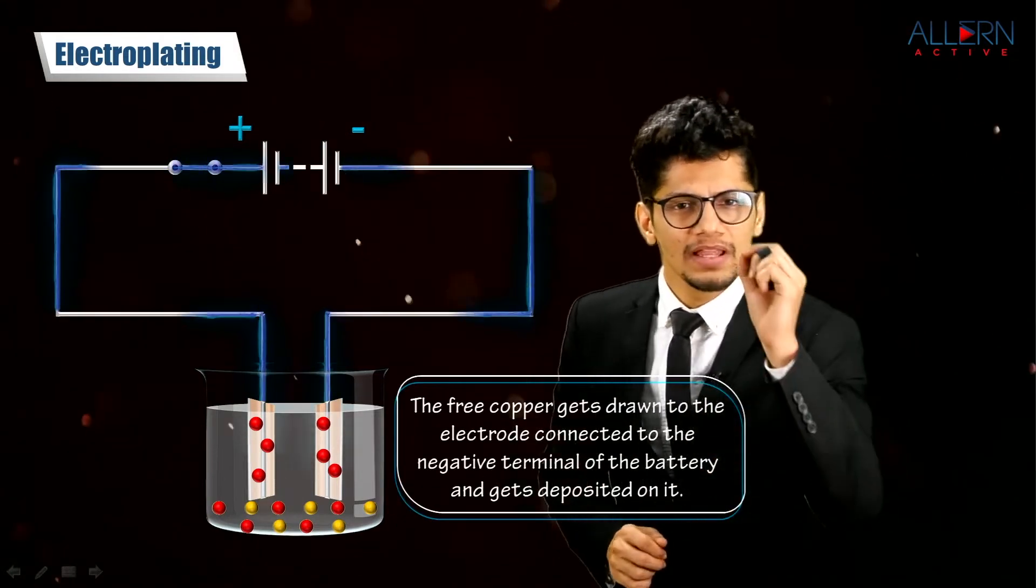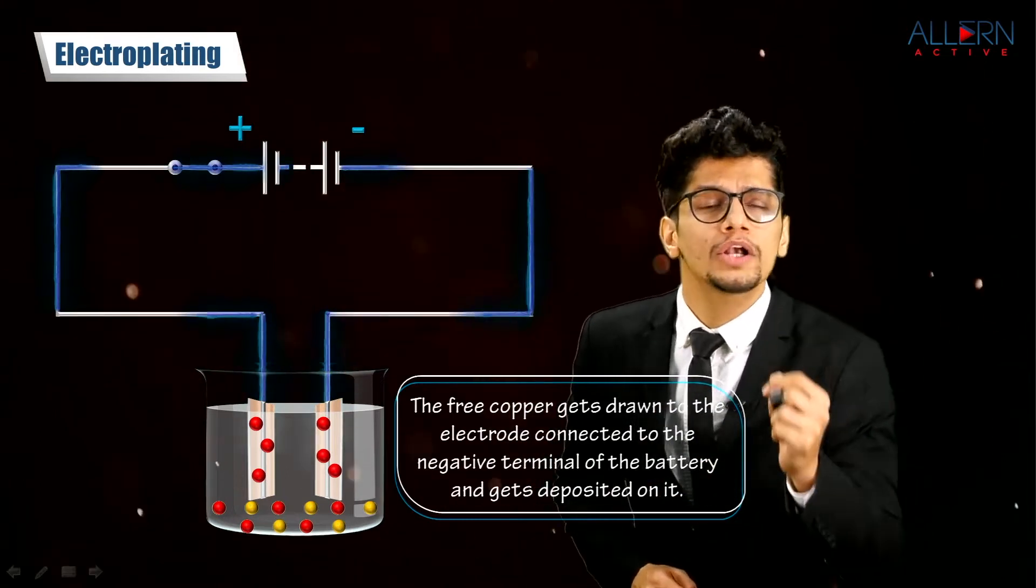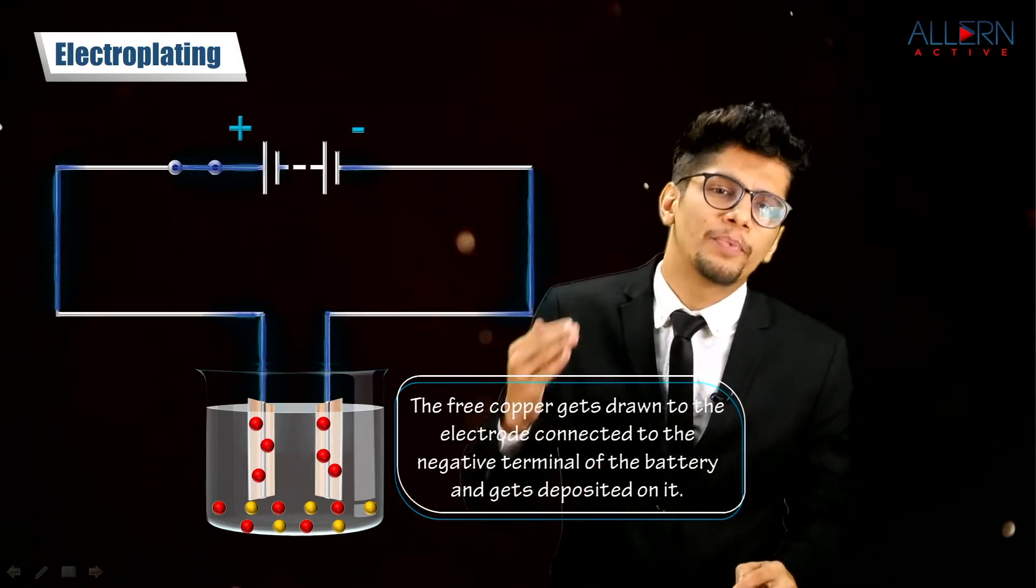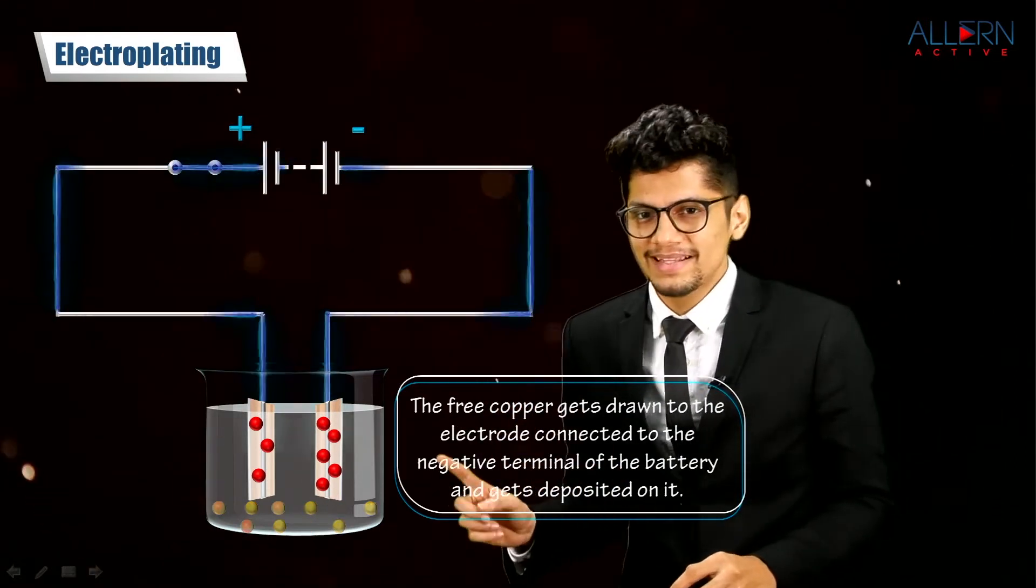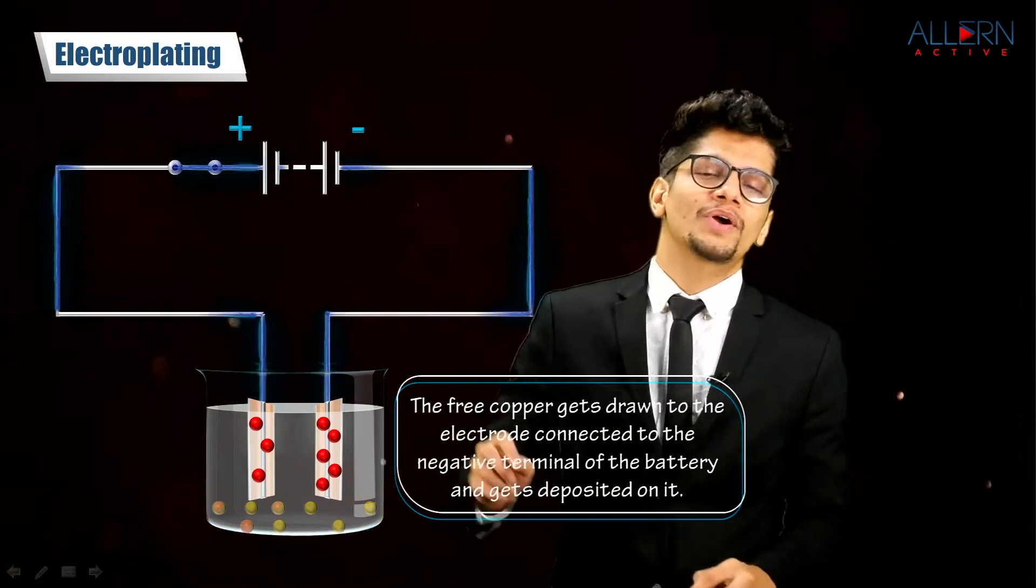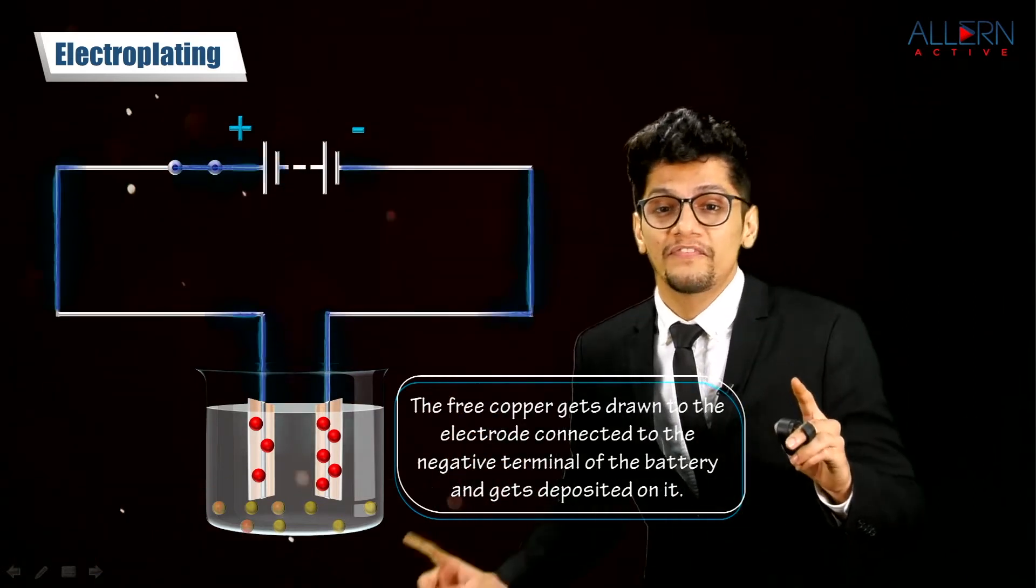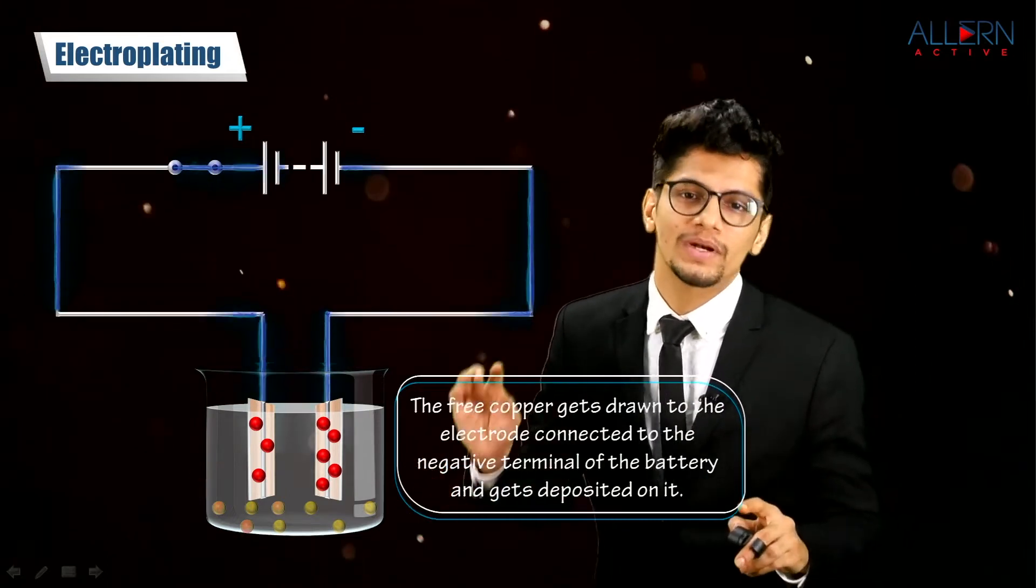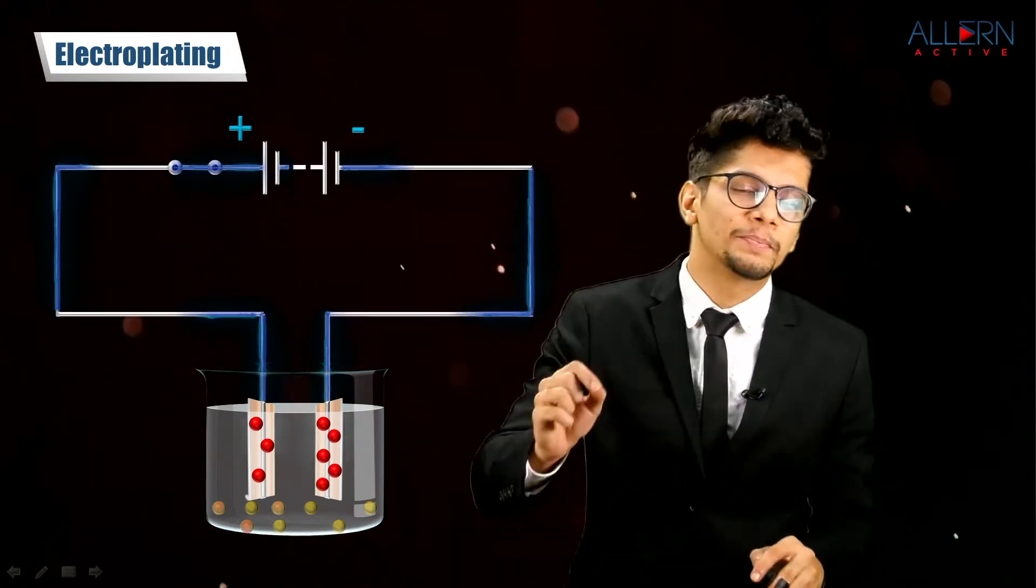The free copper gets drawn to the electrode connected to the negative terminal of the battery and gets deposited on it. The copper from the copper sulfate solution goes to the electrode and settles there, getting deposited on it.